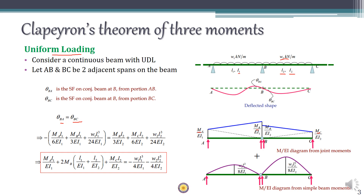The derivation details are not critical, but you must know the final equation. For uniform loading, the Clapeyron's equation states: M_A·(L₁/EI₁) + 2M_B·(L₁/EI₁ + L₂/EI₂) + M_C·(L₂/EI₂) = −w₁L₁³/(4EI₁) − w₂L₂³/(4EI₂).